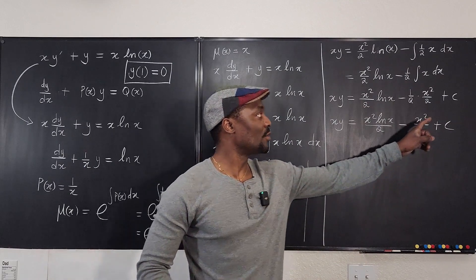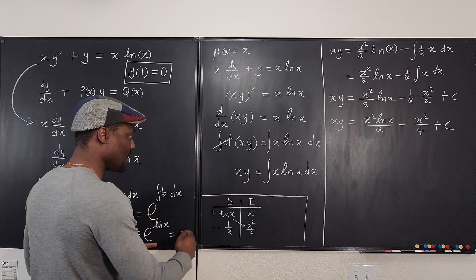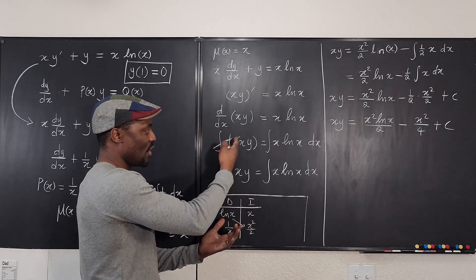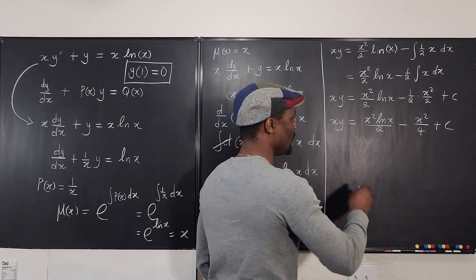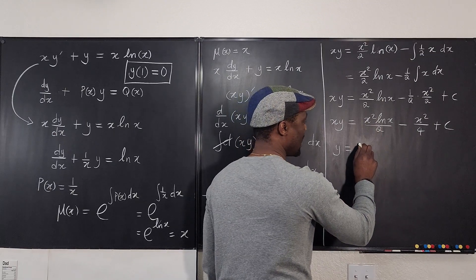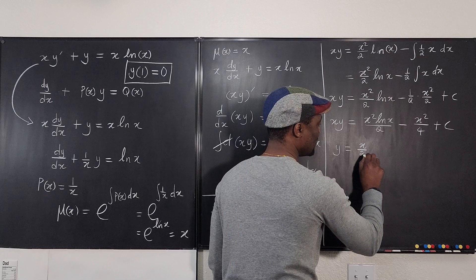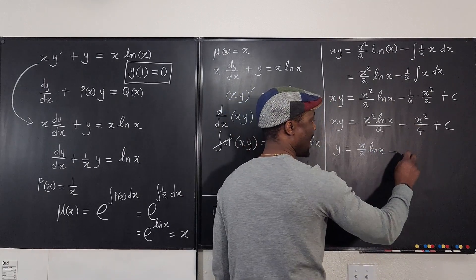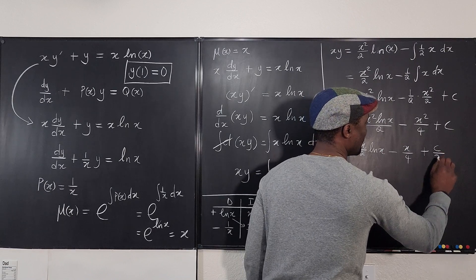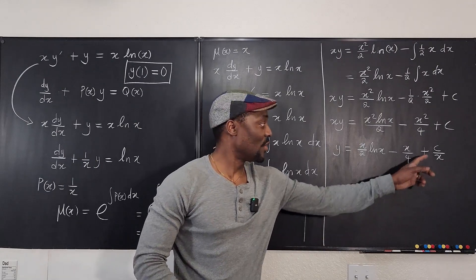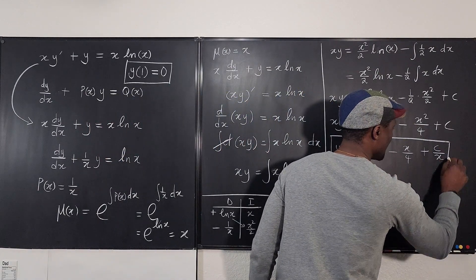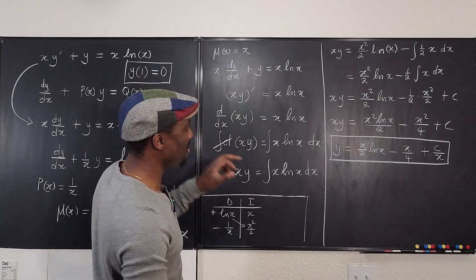Remember to introduce plus C as soon as you integrate the right-hand side. Now we isolate y by dividing every term by x, giving y equals x over two times ln(x) minus x over four plus C over x. This is the general solution — we don't know C yet, but we can use the initial condition to find it.